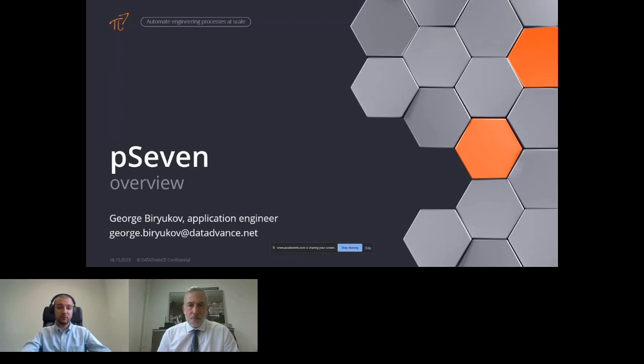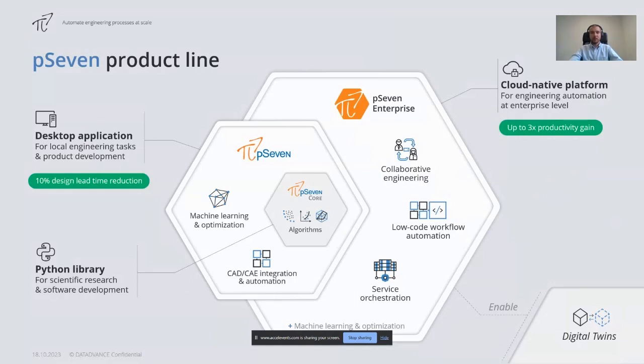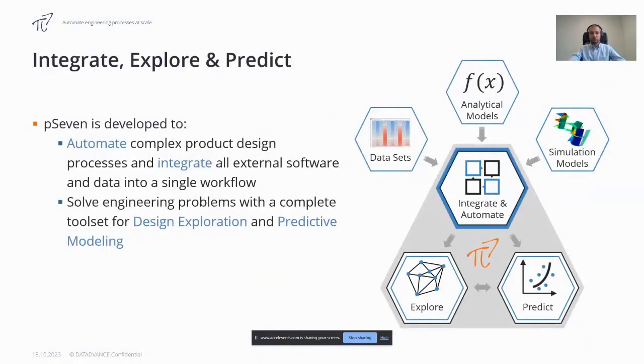Let me remind you of the pSeven product line. In the center we have pSeven Core, which is a Python library with a set of tools and algorithms which provide a solid foundation for other products. Next we have pSeven, a desktop application that provides advanced tools for engineering tasks packaged in an easy to use graphical interface. And the last layer is pSeven Enterprise, a cloud-based solution focused on collaboration and automation at enterprise level. In this presentation we'll talk about the desktop version.